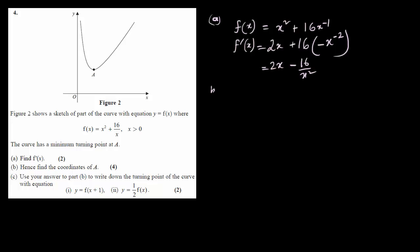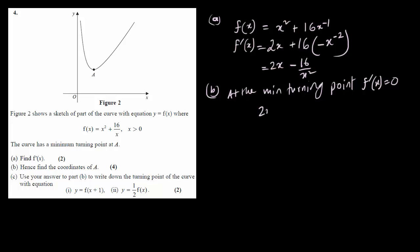Question (b) asks us to find the turning point. Remember, the minimum turning point is A, and the rule is that at the turning point — or at the minimum point — the gradient, or f'(x), equals zero. So we write: at the minimum turning point, dy/dx or f'(x) equals zero. So f'(x) = 0, meaning 2x minus 16/x² equals zero.